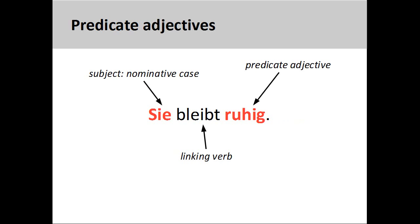In the sentence 'sie bleibt ruhig' — she remains calm — the verb 'bleibt' simply links the subject with a state of being. Since no real action is depicted, both the subject and predicate are in the nominative case.